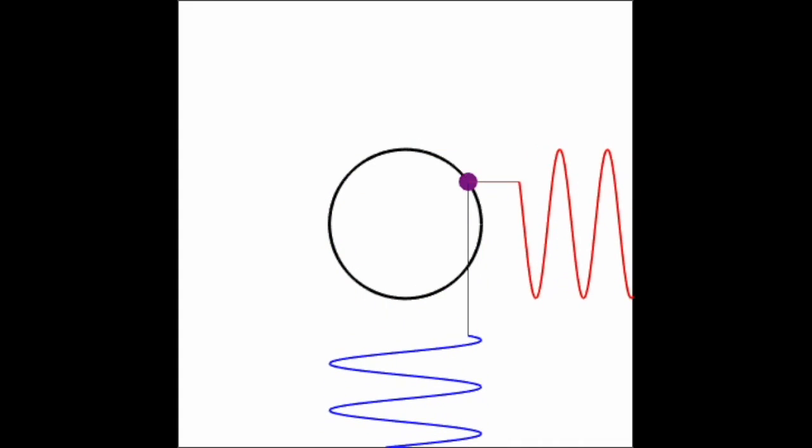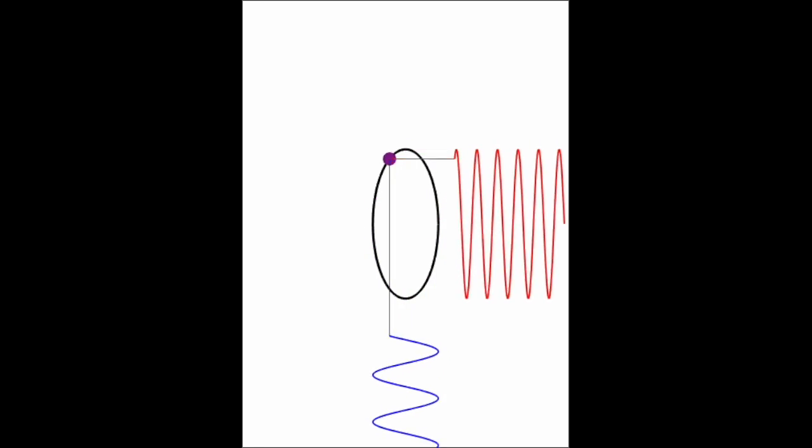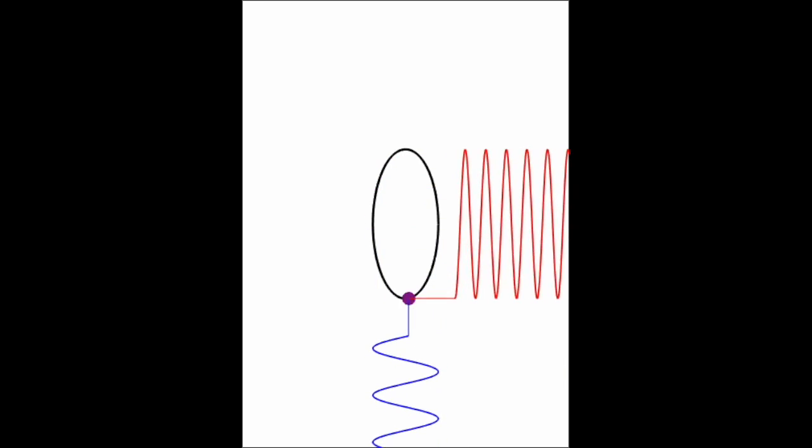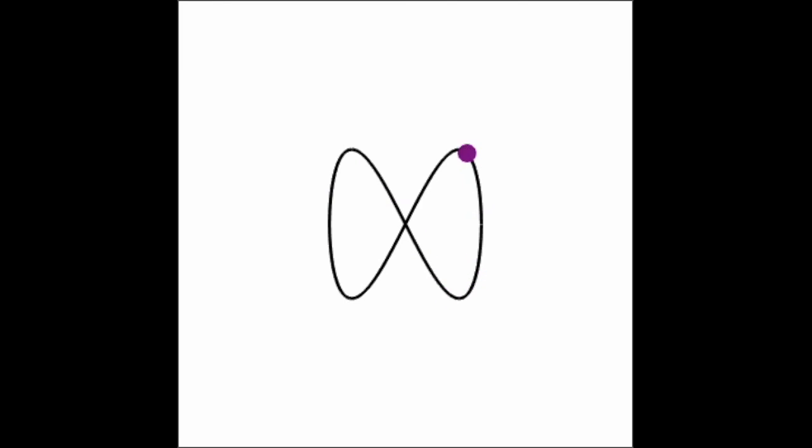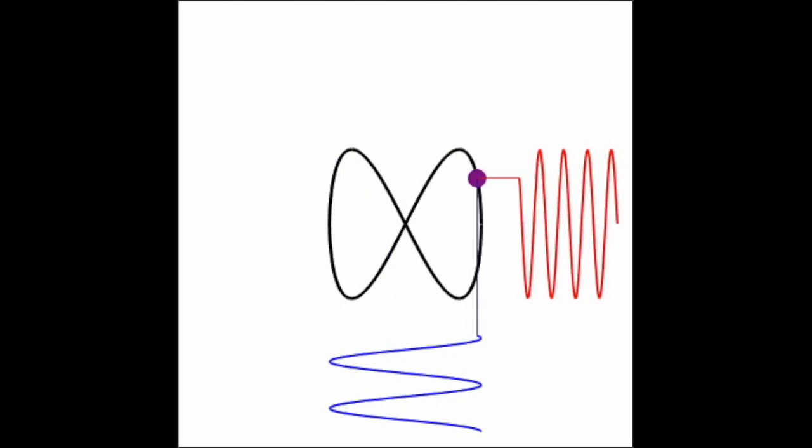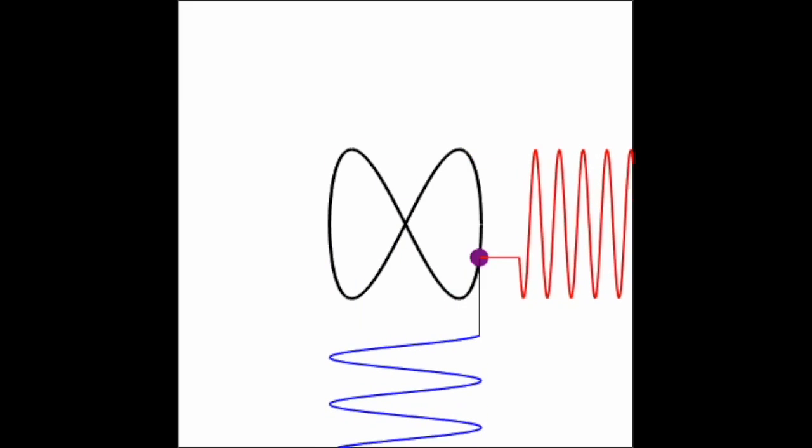And it's not just circles. For a point traveling around an ellipse, the horizontal and vertical components still form sine waves when we plot them against time. The only difference here is that now the vertical component has a higher amplitude than the horizontal component, even though they still have the same frequency. Sine waves can be used to describe relatively complicated trajectories as well. Let's take this figure 8 shaped curve. Again, the horizontal and vertical coordinates trace out sine waves as functions of time, but now the frequency of the vertical component is twice that of the horizontal component.